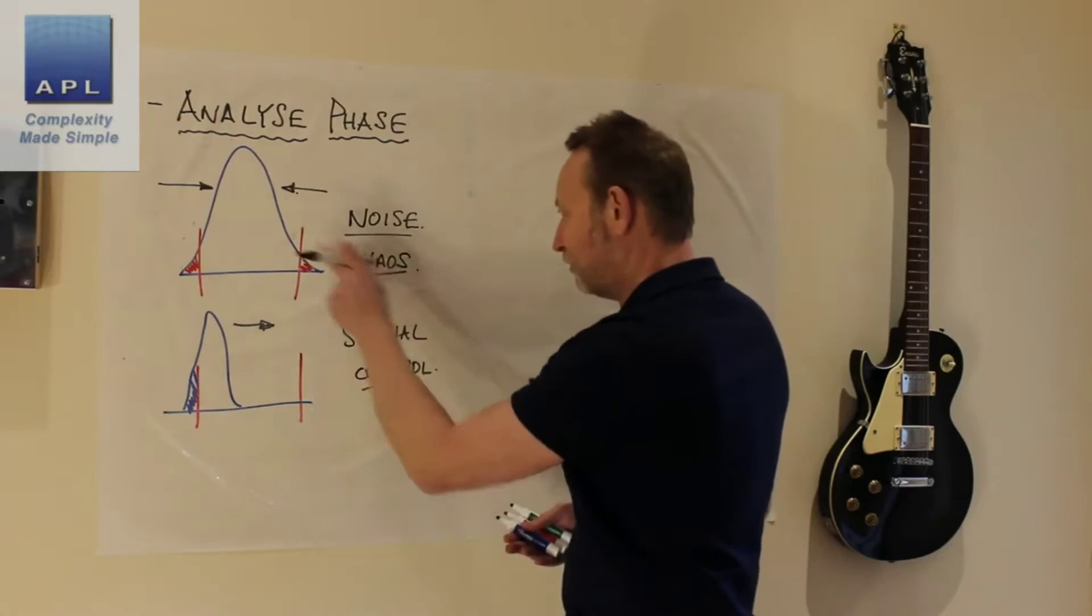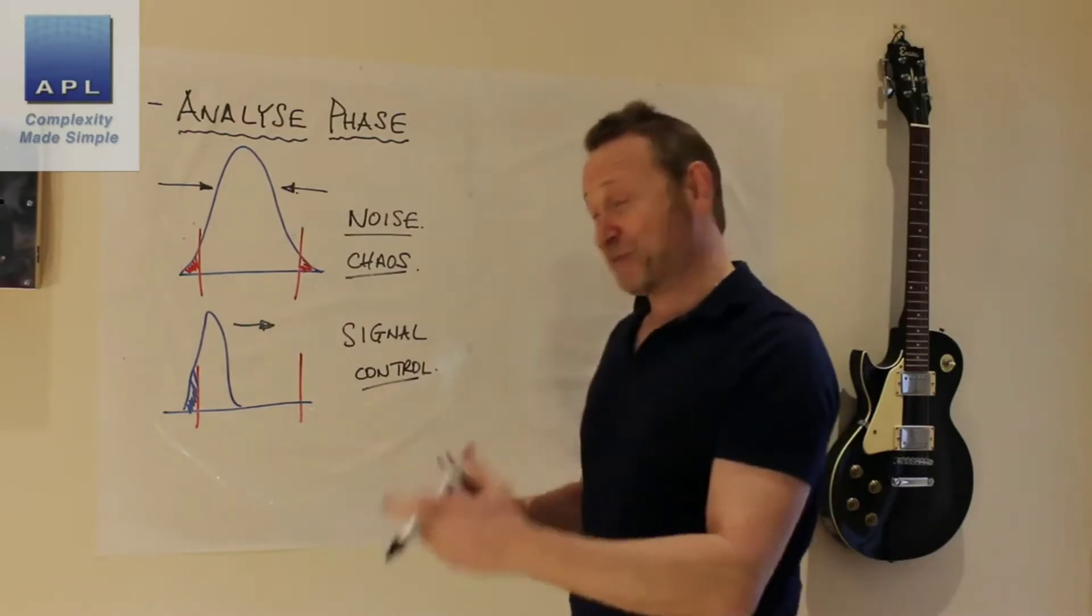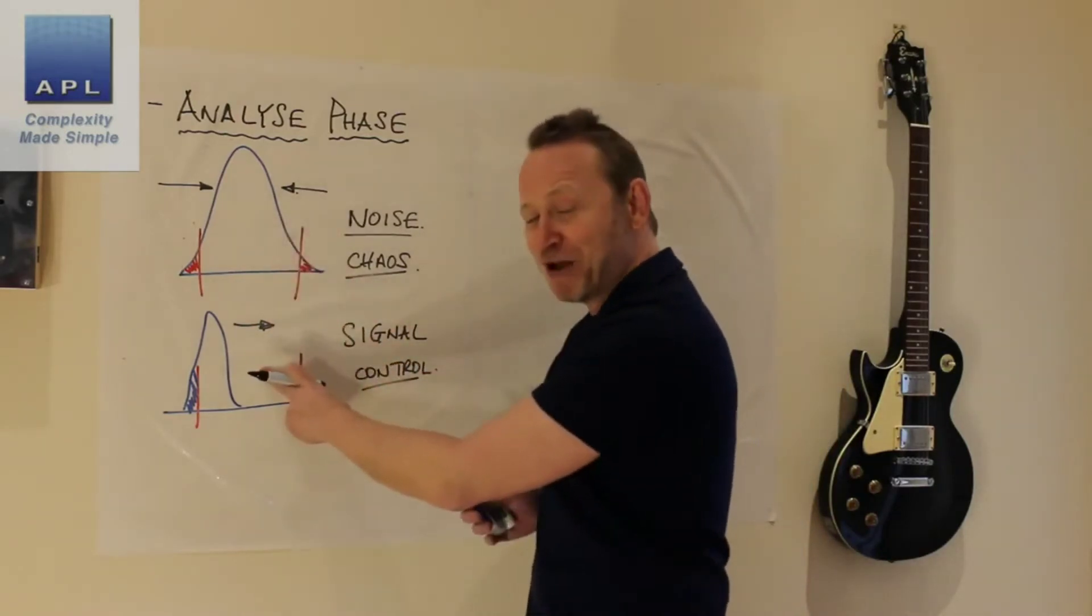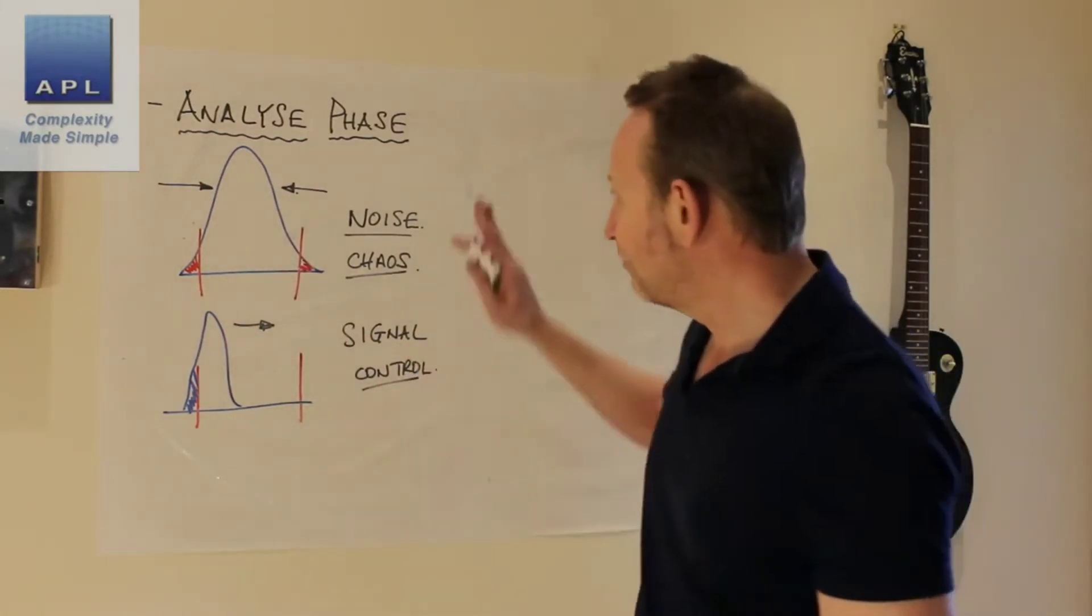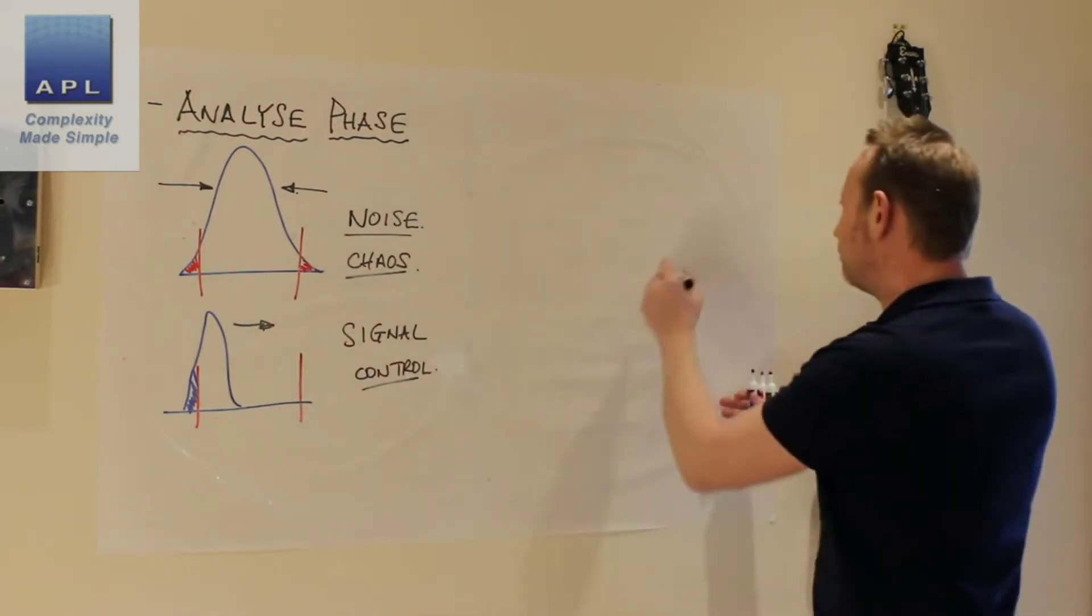I would also refer to this as chaos, this is control. This is noise, this is signal. You might also say SPC. By the way, this is common cause variability, this is special cause variability. So there are lots of different ways of saying this, but this analyze phase at the top here, if we've got to remove the noise.